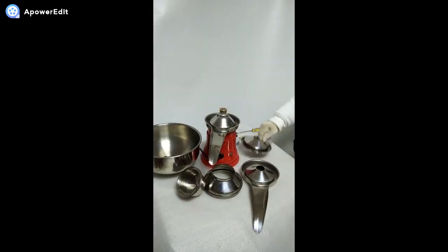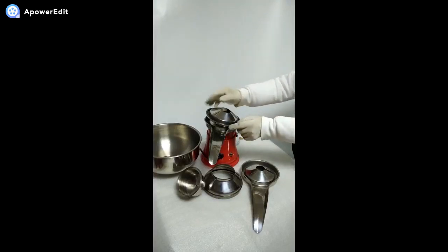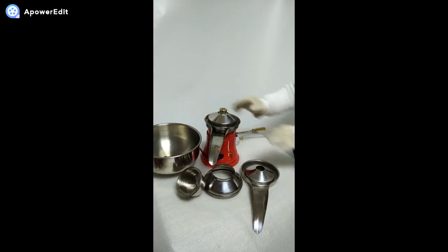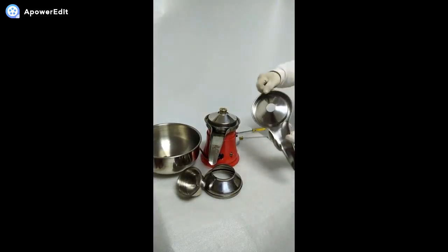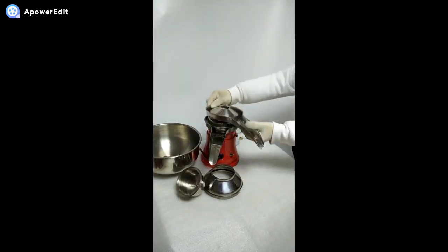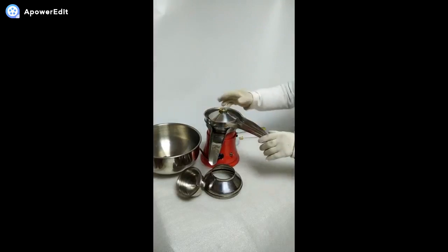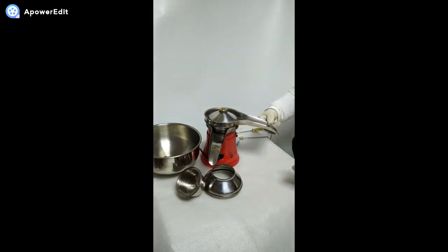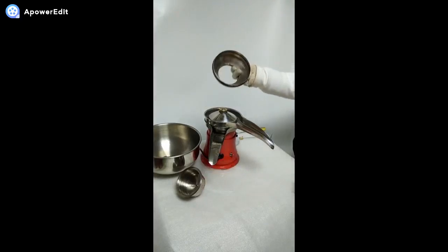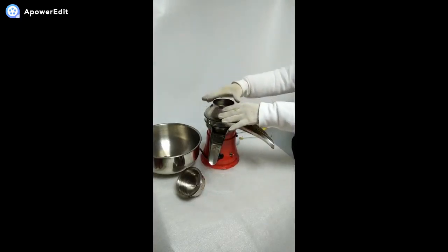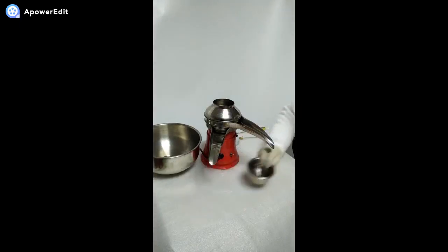Press gently and attach the skim milk spout and the cream spout to the containers below. The cream spout can be turned at will. Press gently to attach the cream spout, the funnel spout, and the funnel in turn.